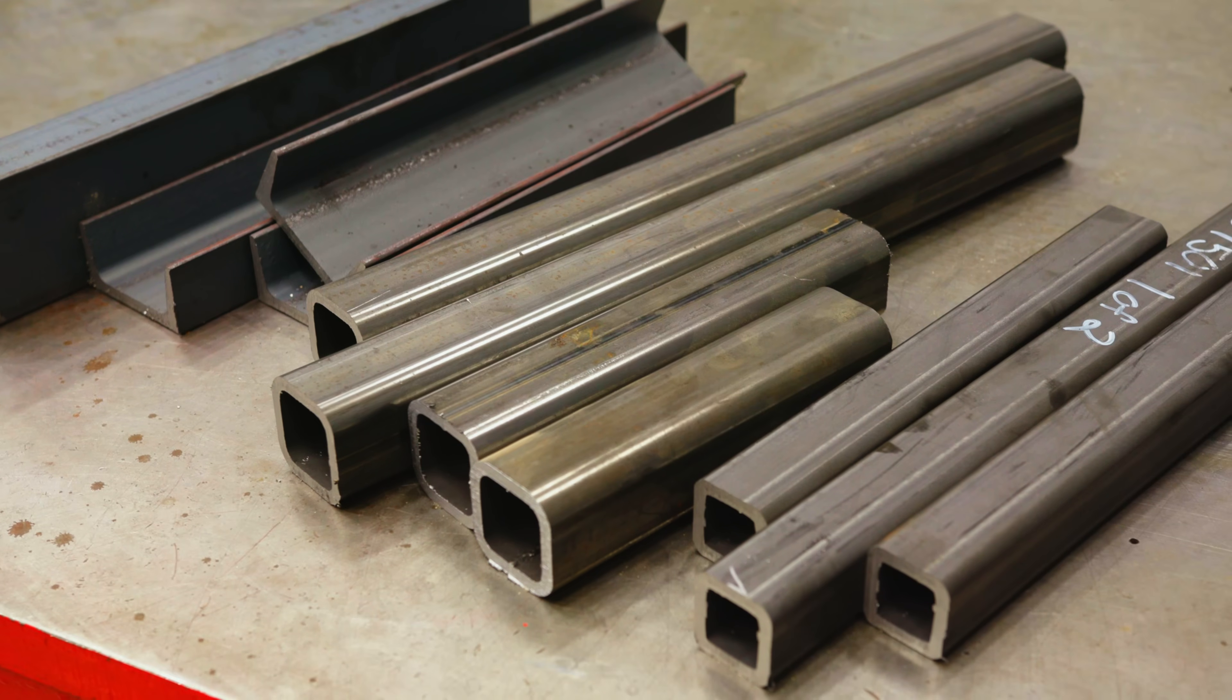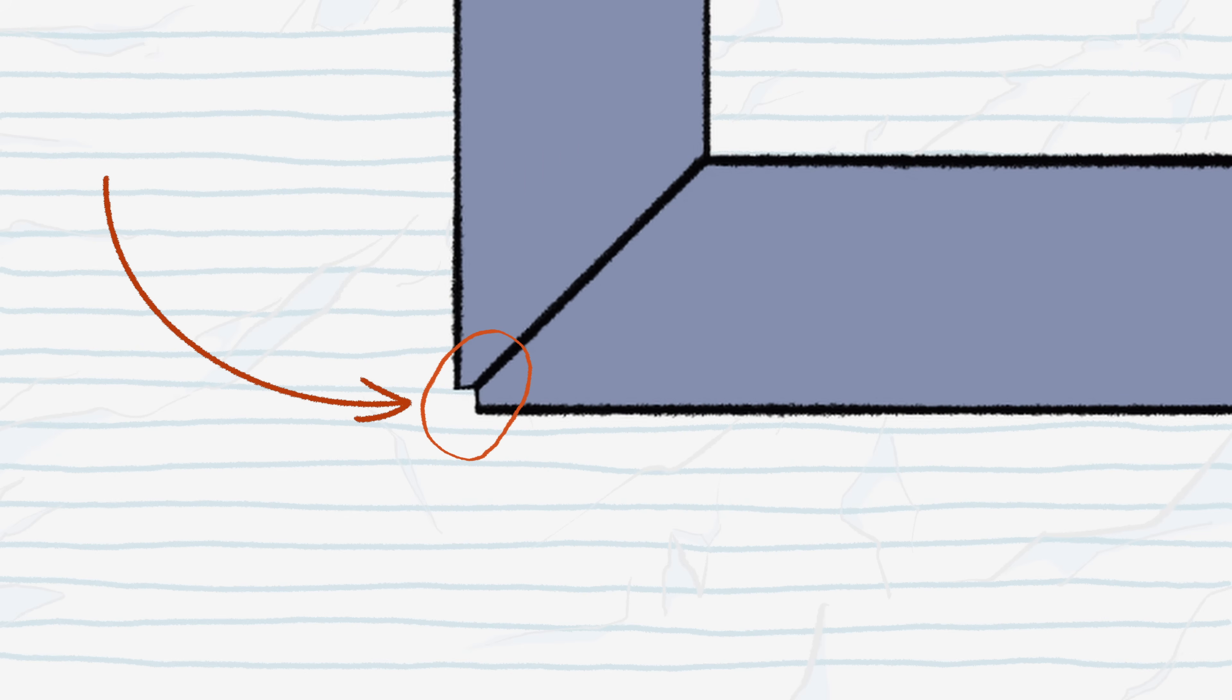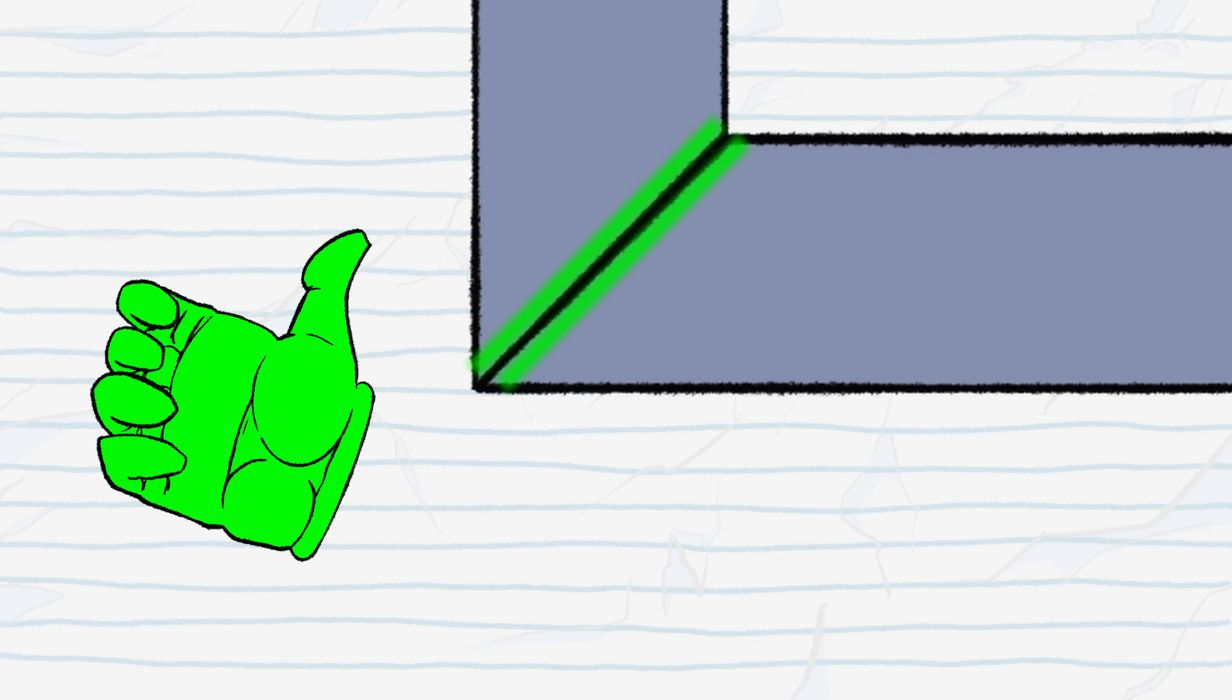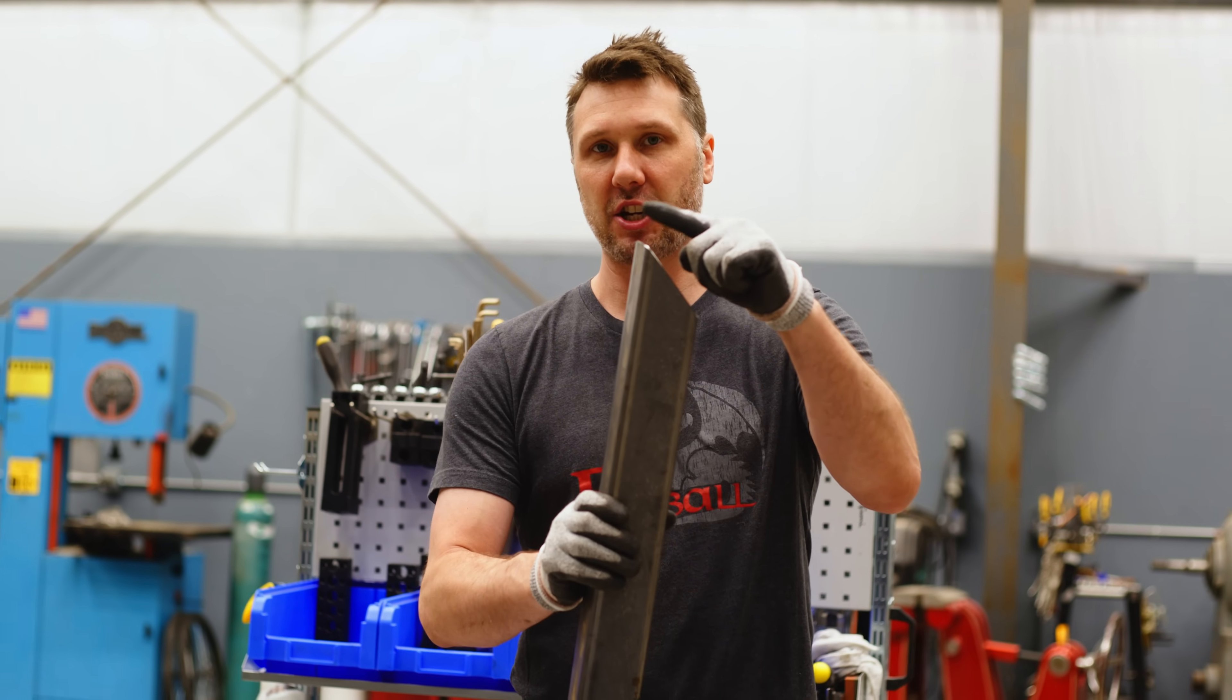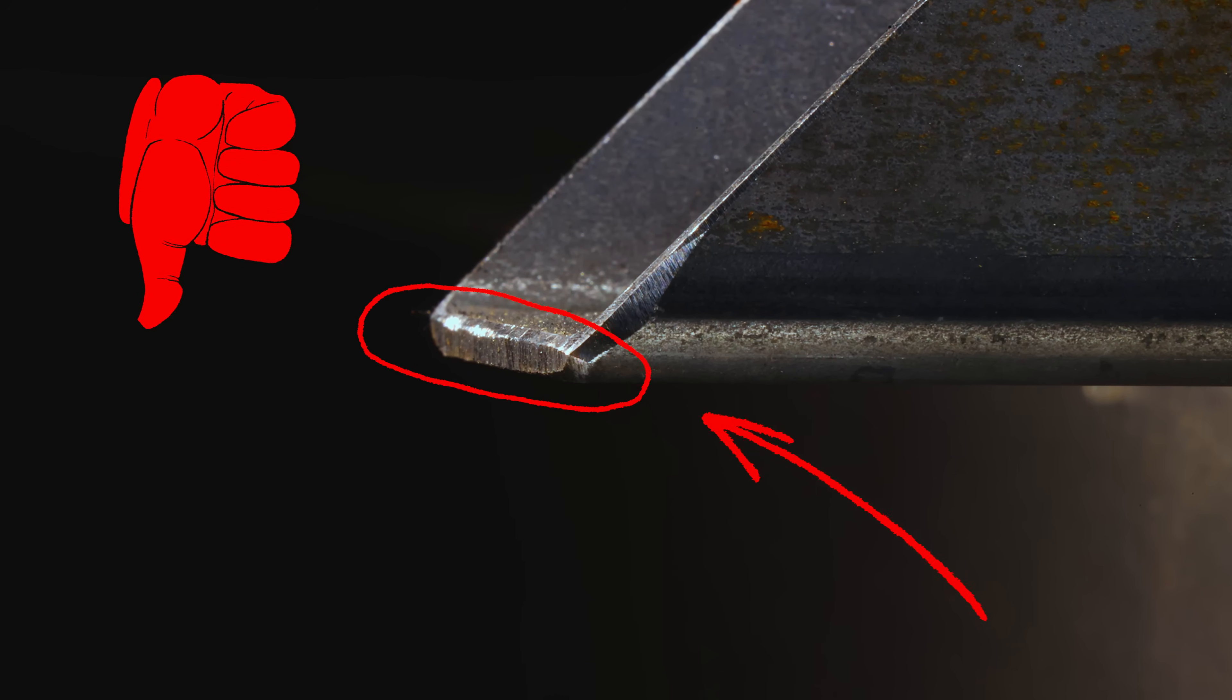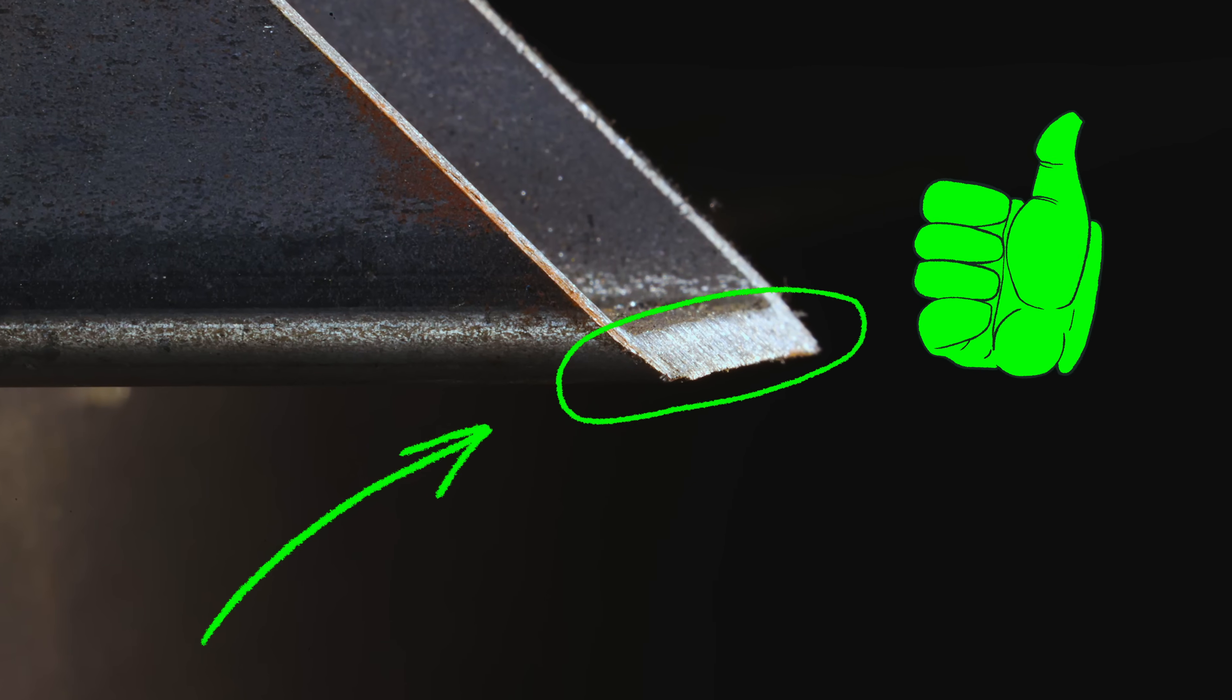And you see how this edge is flat? What's happening is this 45 is proud of the actual measurement we need. What we need is this 45 to intersect the thickness of the material. So I want you guys to be aware when fabricating of this condition right here. The miters shouldn't look like this where it comes to a flat surface, but instead looks like this, where the material wall is a perfect 45 degree.